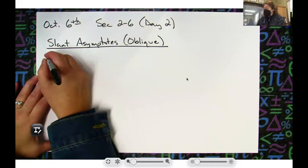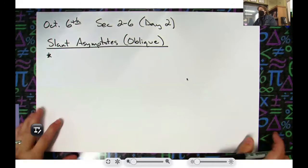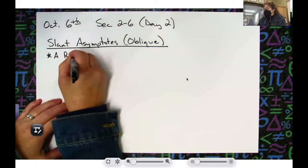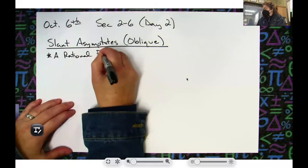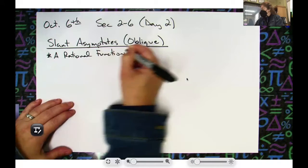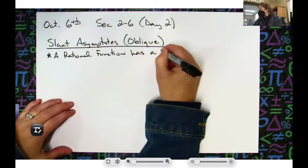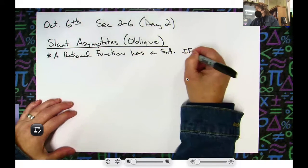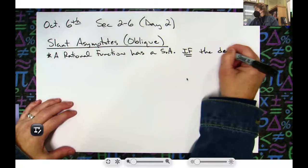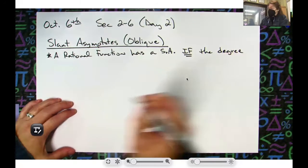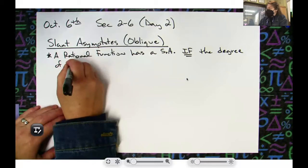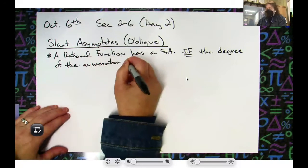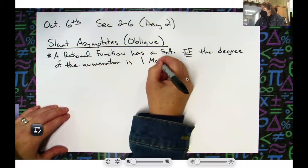We've basically got a rule for knowing when you're going to have one of these slant asymptotes. A rational function has a slant asymptote — I'm going to abbreviate that — if the degree of the numerator is one more than the degree of the denominator.